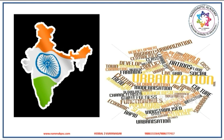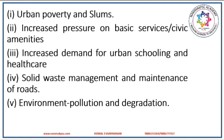Karnataka is expected to reach an urban population proportion of 50% by 2026. The process of urbanization gives rise to various issues and problems. It results in urban poverty and formation of urban slums. It also leads to increased pressure on basic services and civic amenities like housing, water supply, sanitation, electricity, etc. It leads to increased demand for urban schooling and healthcare, problems in solid waste management, maintenance of roads, and ultimately environment pollution and degradation.